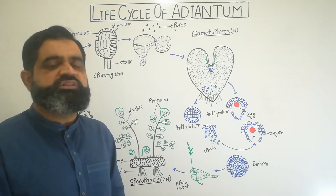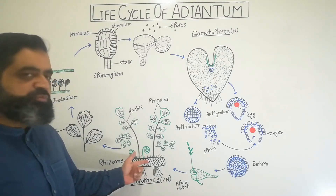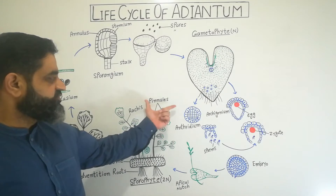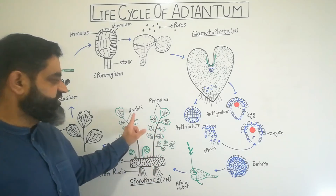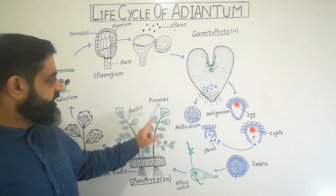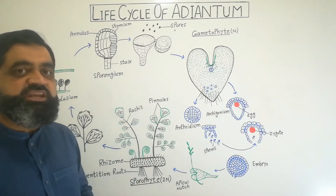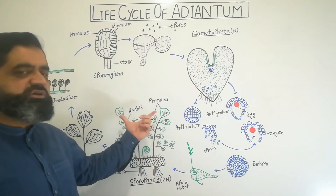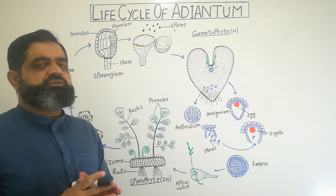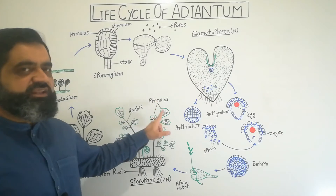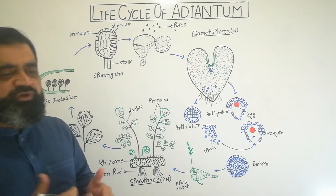This is a special characteristic belonging only to ferns and plants like Adiantum. When young leaves start to mature, they become straight. The main branch of the leaf or frond is known as the rachis. This rachis contains pinna and pinnules. The pinna is a branch and the small leaf-like structures are known as pinnules. These pinnules and pinna are green in color and photosynthetic, while the rachis and main stem are black and shiny.